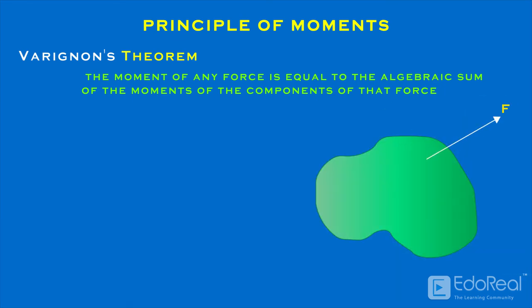Consider the force F acting in the plane of the body as shown. The forces F1 and F2 represent any two non-rectangular components of F. The moment of F about point P is given as: